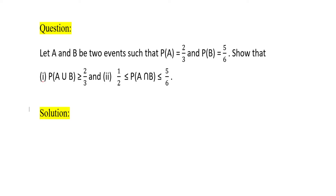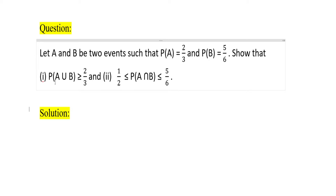Hi students. Let A and B be two events such that P(A) = 2/3 and P(B) = 5/6. Show that P(A∪B) ≥ 2/3 and 1/2 ≤ P(A∩B) ≤ 5/6.